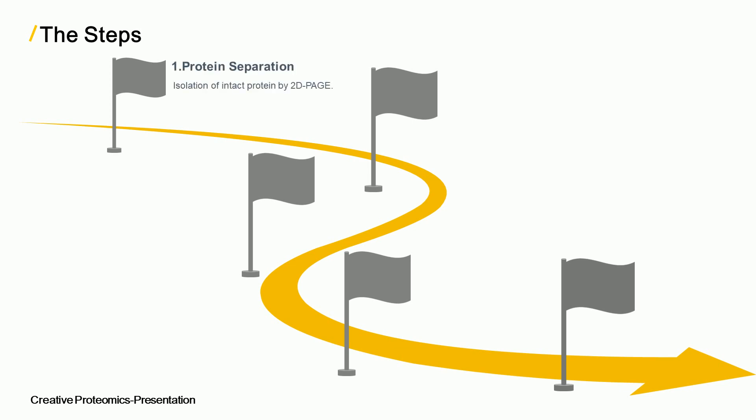The first step is protein separation. The proteins of interest from a sample are separated by gel electrophoresis, usually with two-dimensional PAGE.